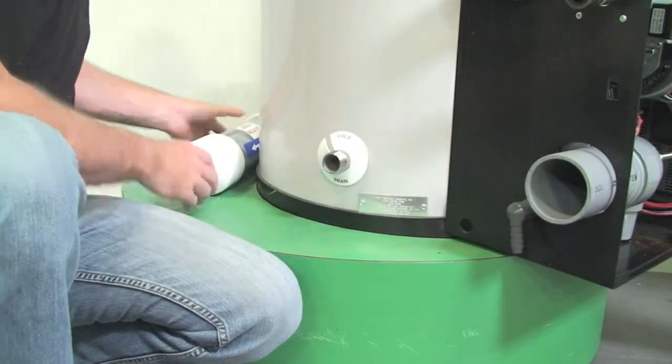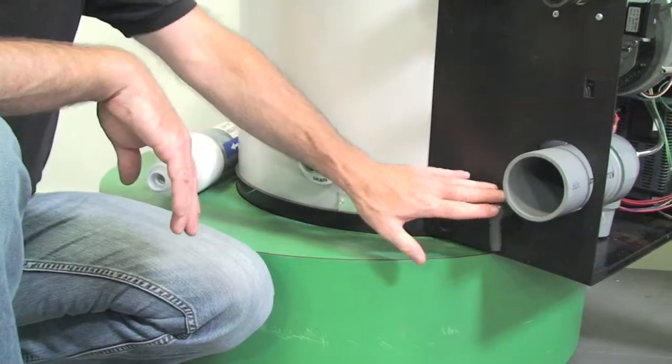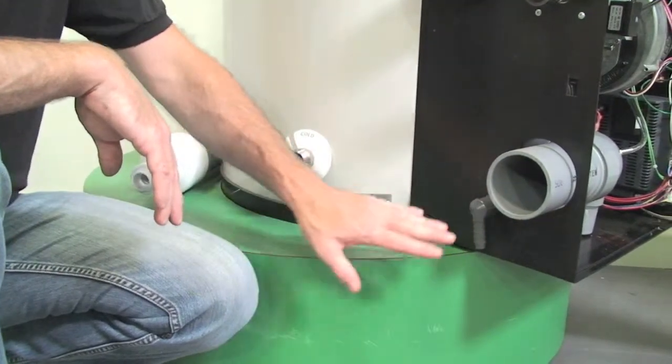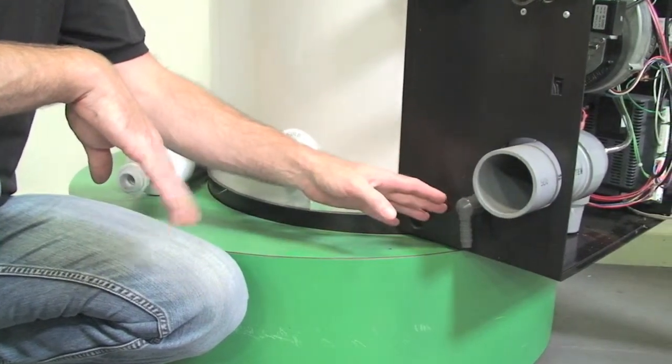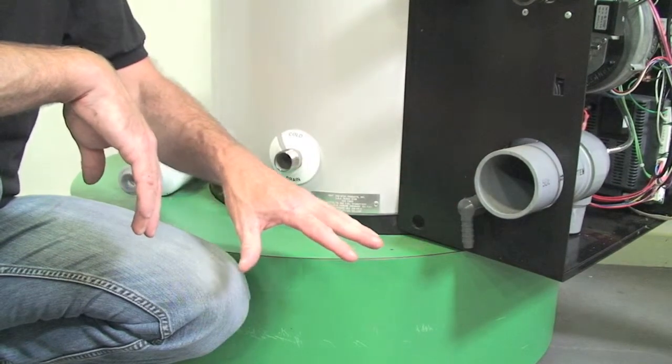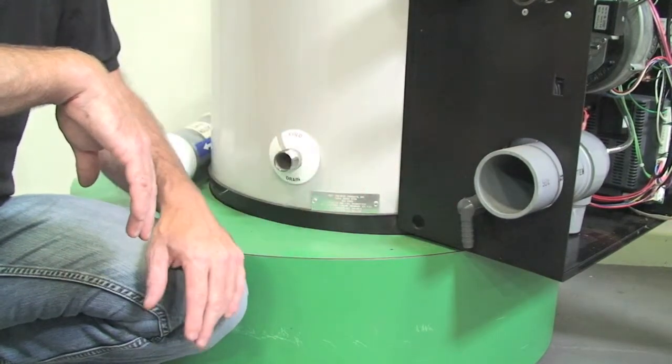The other thing that we want to pay attention to on the condensate is we want it to drain away from the unit. We do not want it to drain back, so we recommend about a quarter inch per foot draining away into either our floor drain or into a condensate pump.